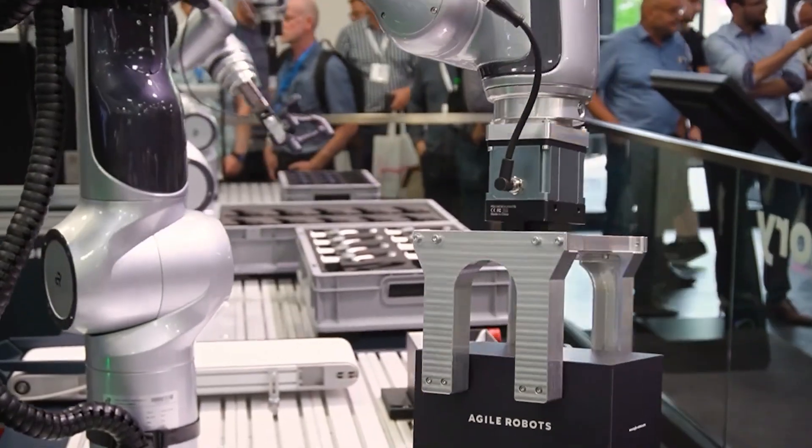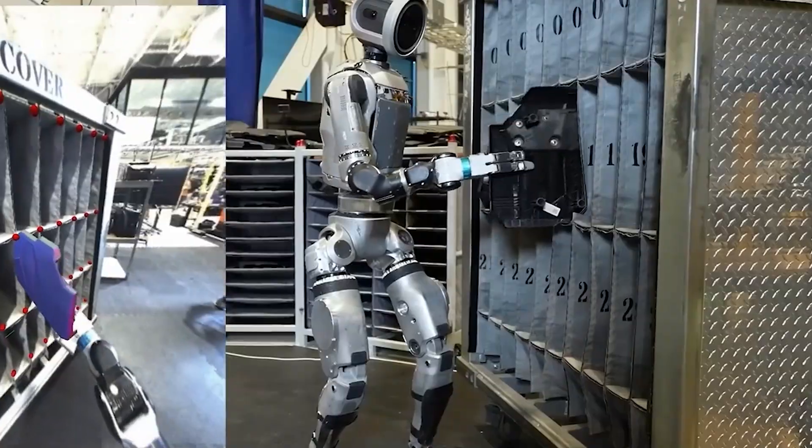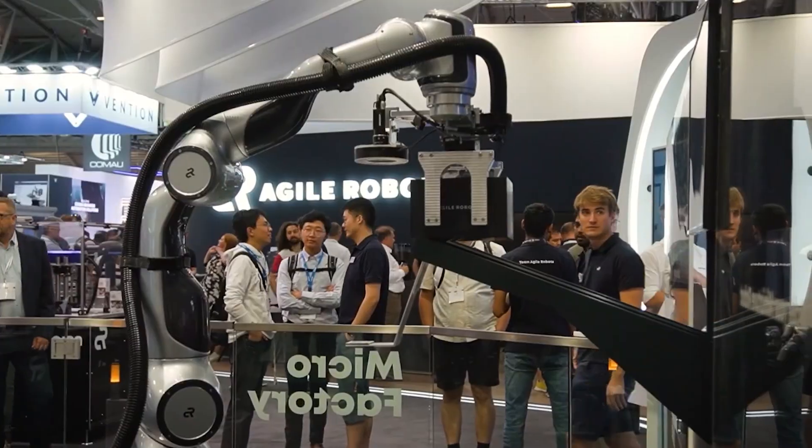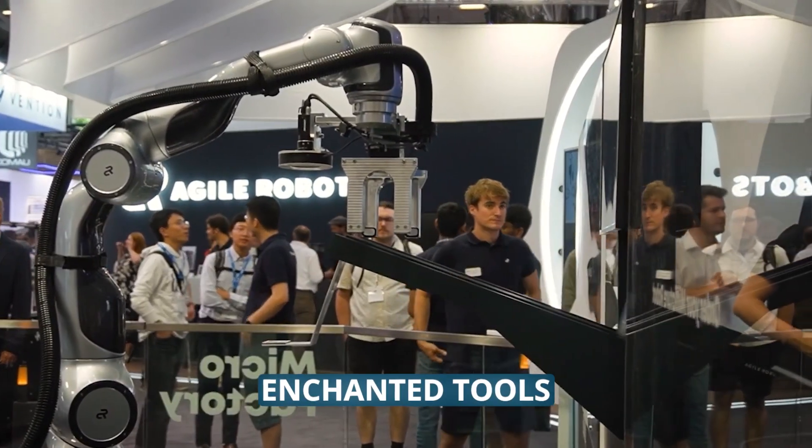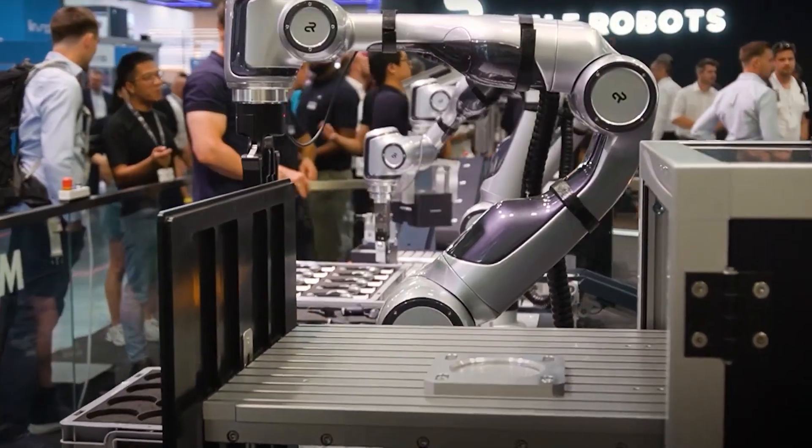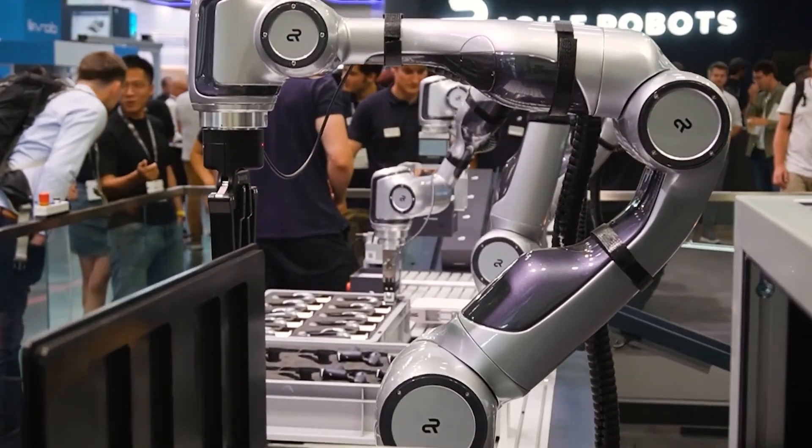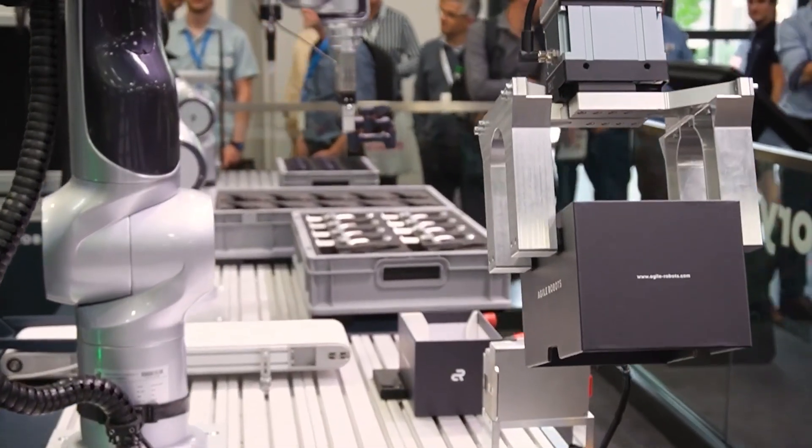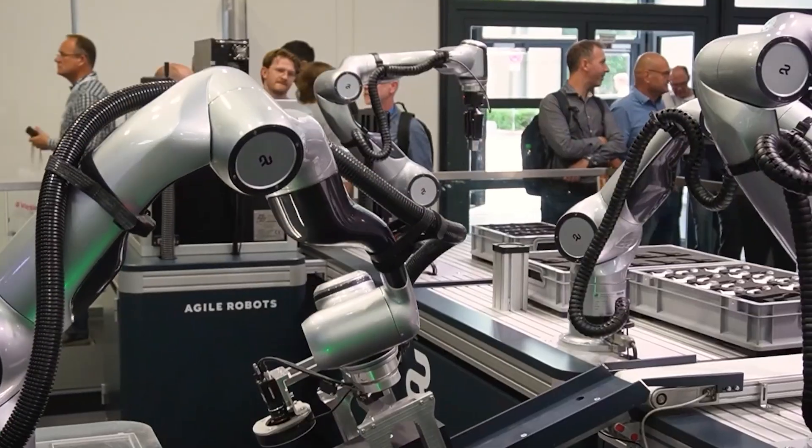Other partners include Agile Robots, Boston Dynamics, yes, the makers of those terrifyingly agile robot dogs, and Enchanted Tools. This diverse testing ecosystem suggests Google is aiming to implement their technology across different robot types and use cases.